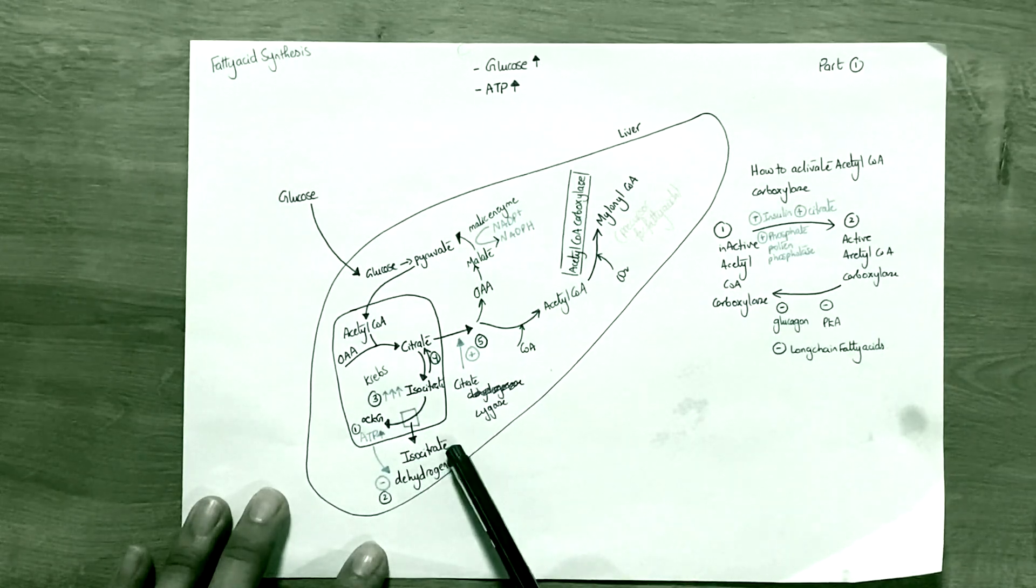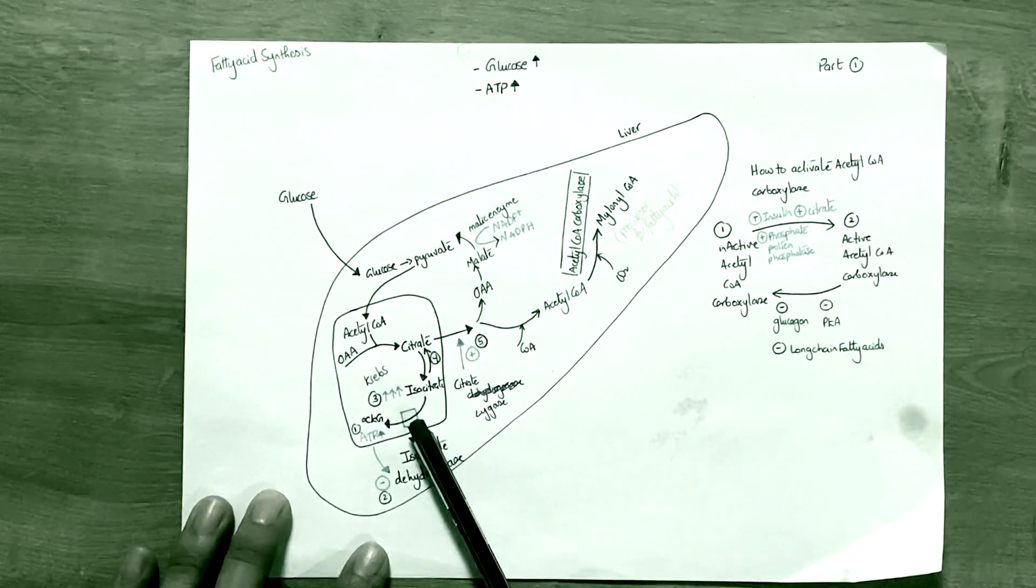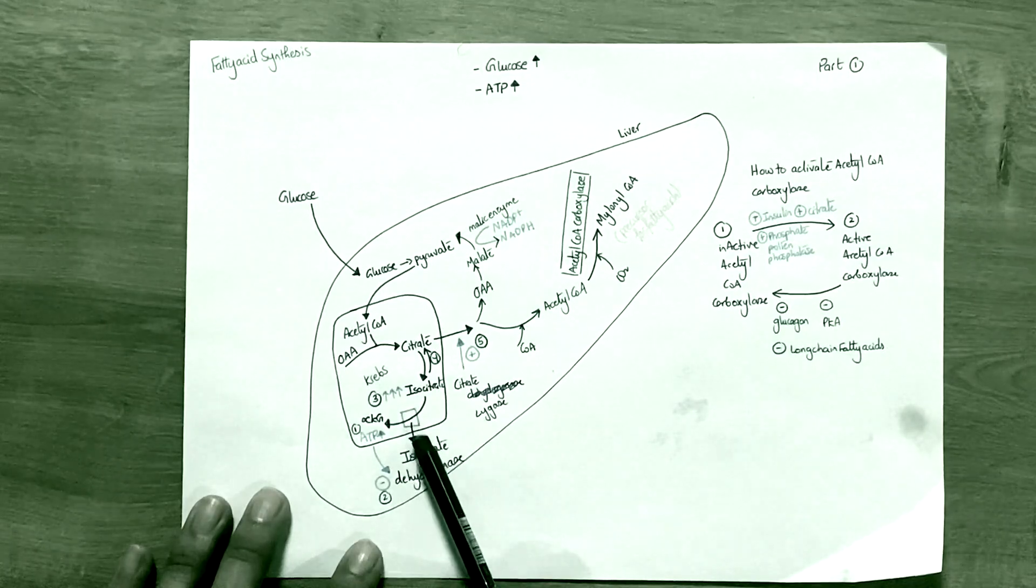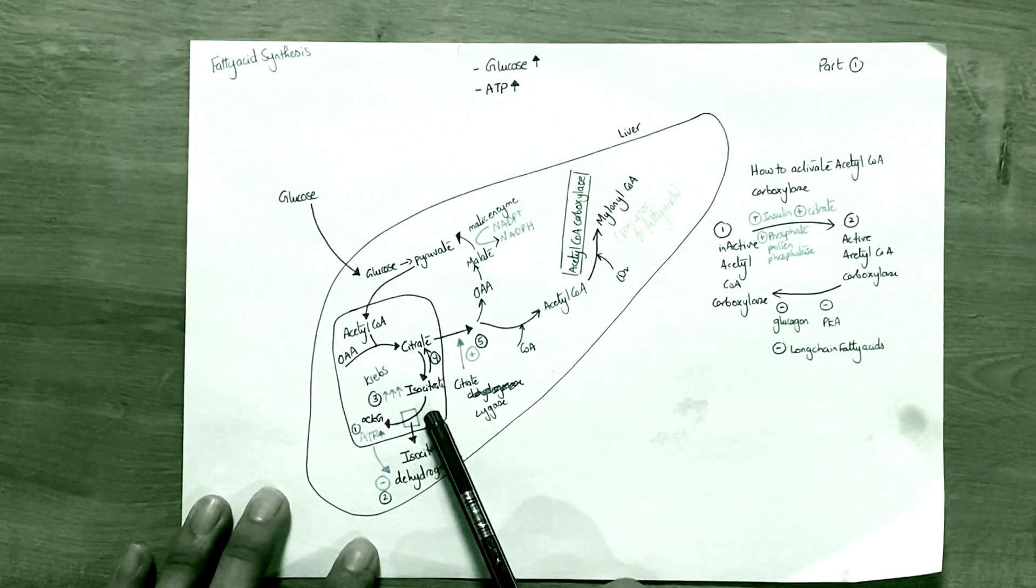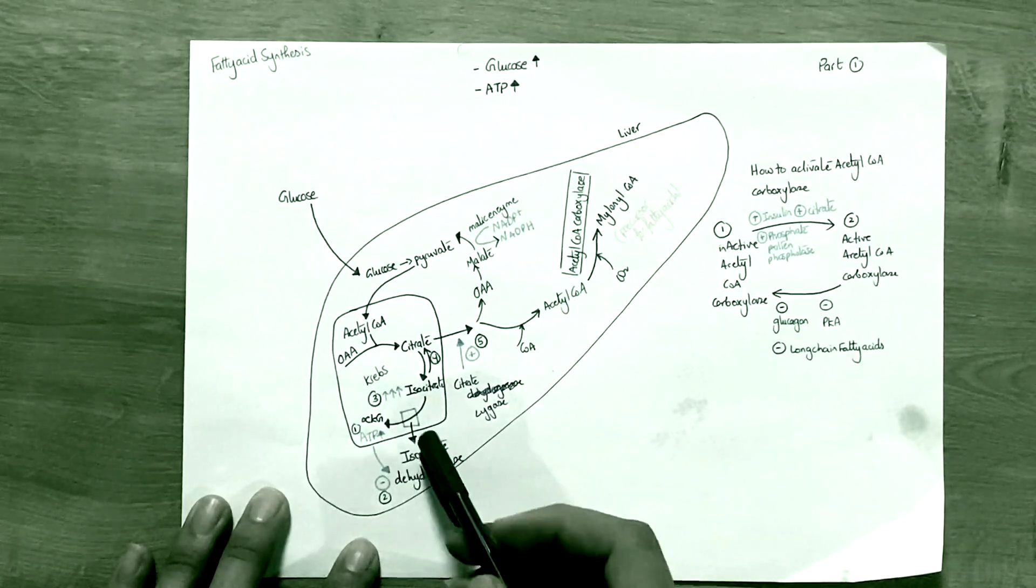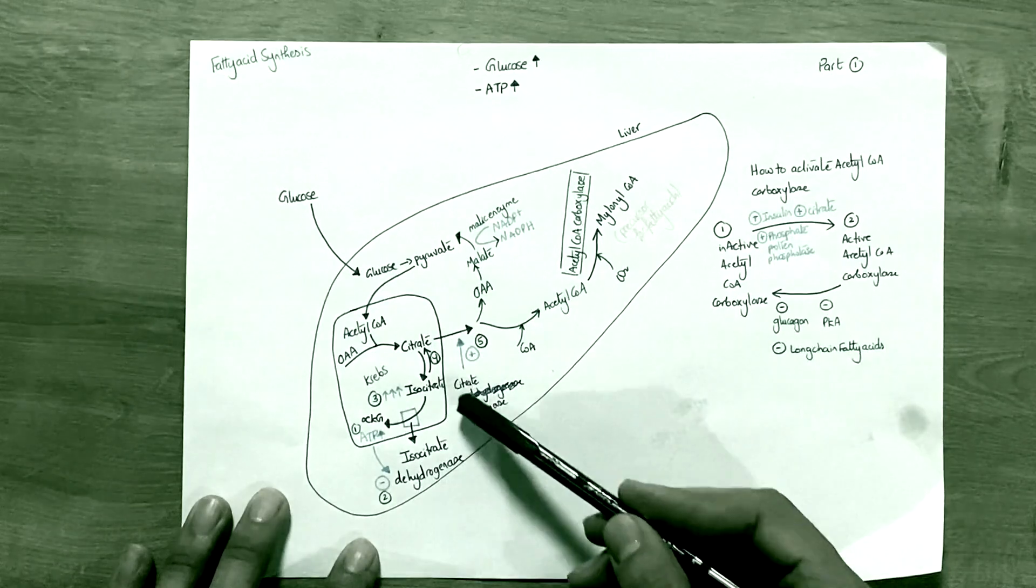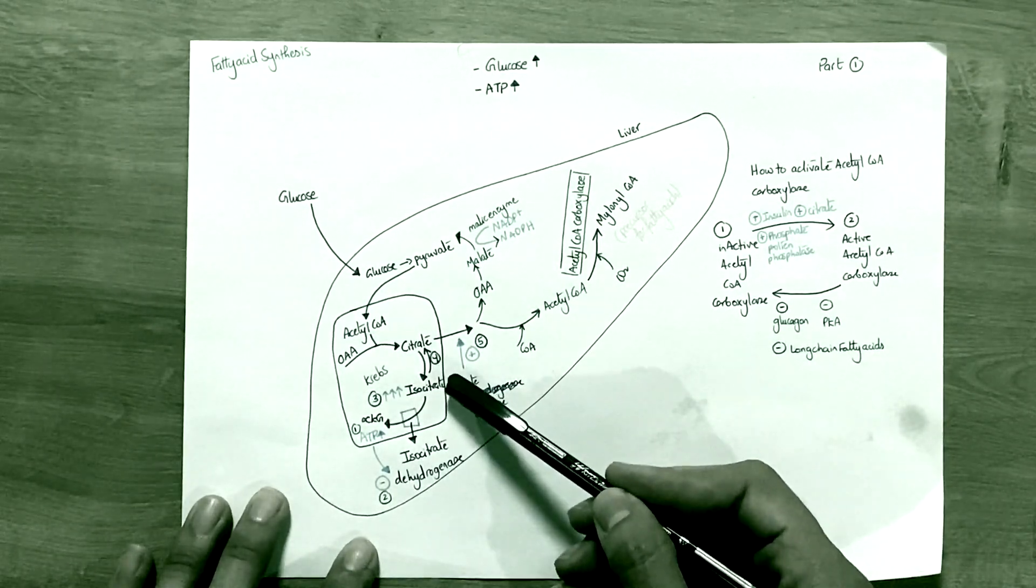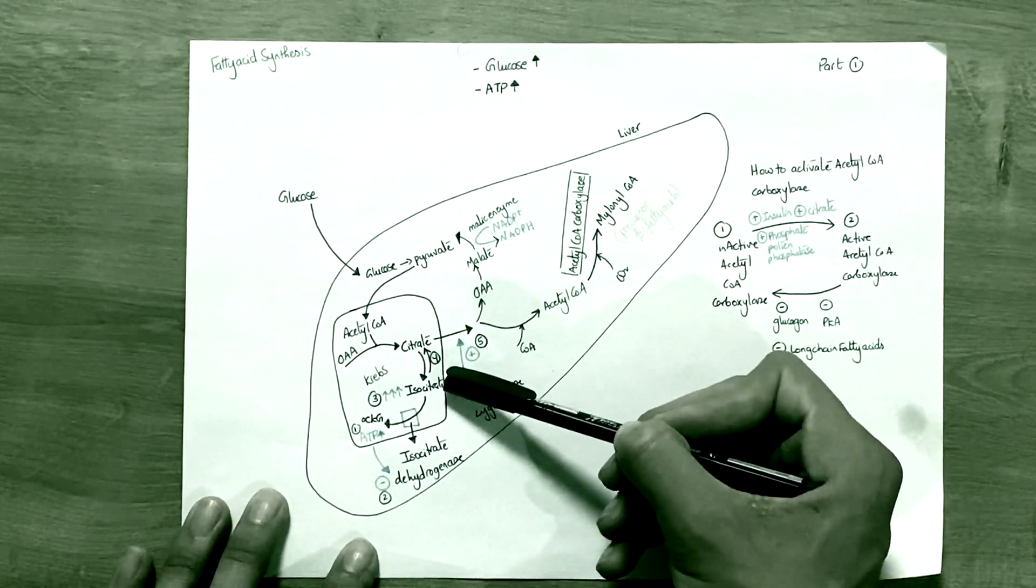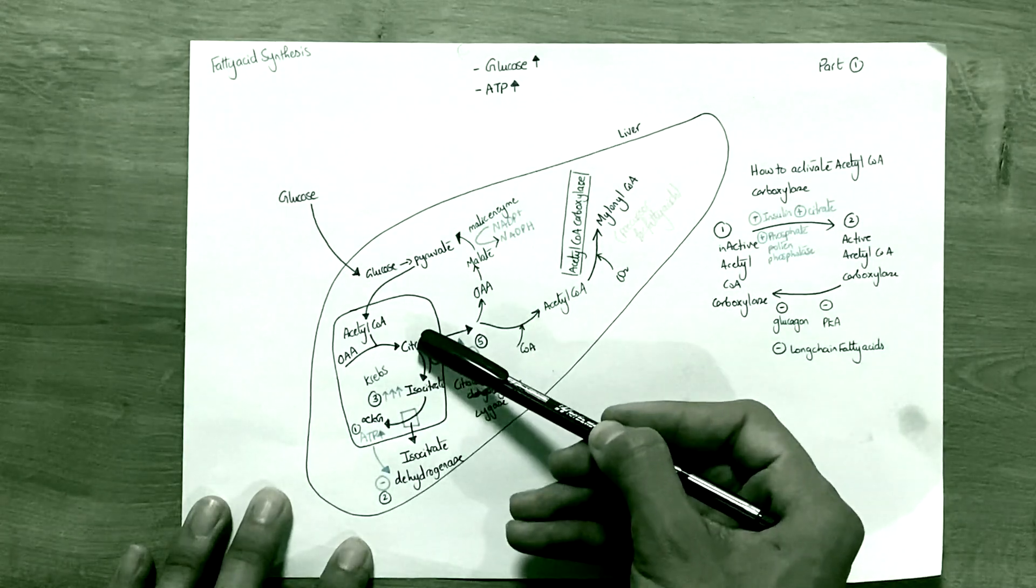As you guys all remember, isocitrate dehydrogenase converts isocitrate into alpha-ketoglutarate. What happens is that this step does not happen, so isocitrate increases in concentration. Hence, when that happens, the step that is previous to this is reversible and isocitrate is converted back into citrate.